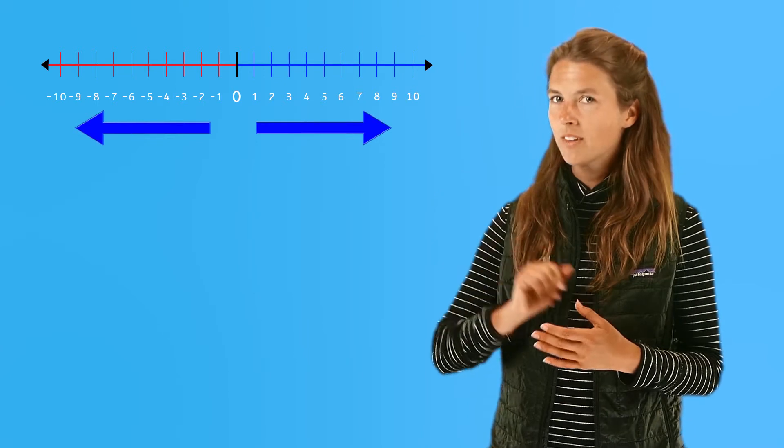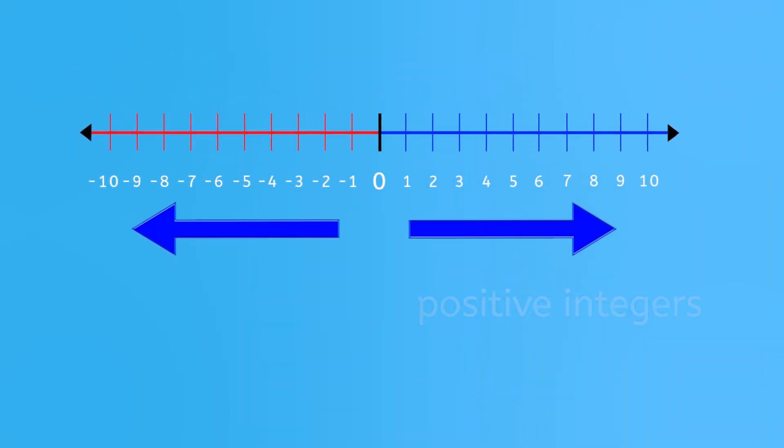Here, let me show you a number line. On our number line, you can see positive integers are greater than zero, are to the right of zero, and increase to the right.